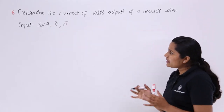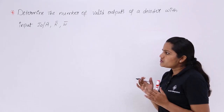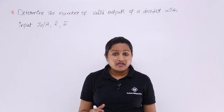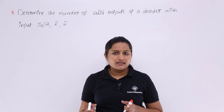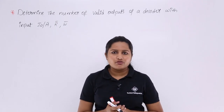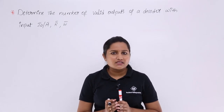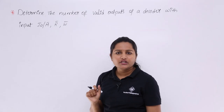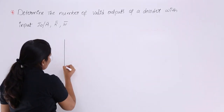Now we will determine the number of valid outputs with this combination for a decoder. We need to decide which decoder to consider. We have 2-to-4, 3-to-8, and 4-to-16 decoders. Since we have 3 inputs, we need to take a 3-to-8 decoder.